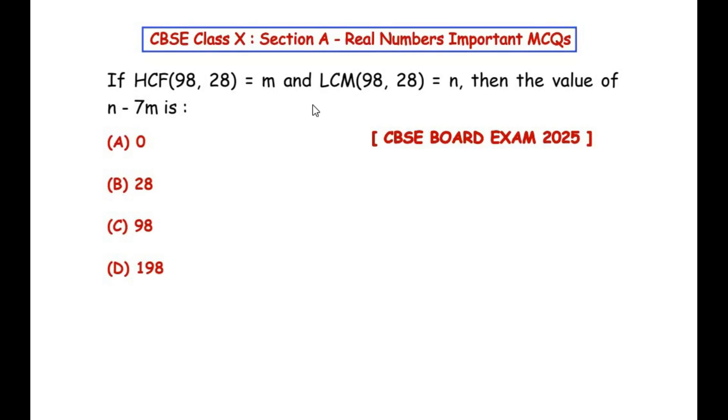Hello and welcome to my channel. In this video, we are going to solve a multiple choice question from the real numbers chapter which had appeared in CBSE Board Exam 2025. If the HCF of 98 and 28 is equal to m and the LCM of the same two numbers is equal to n, then the value of n minus 7m is: